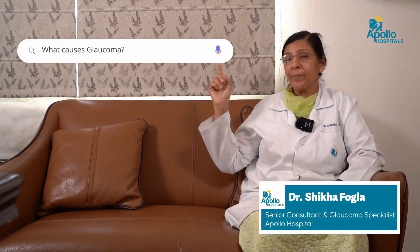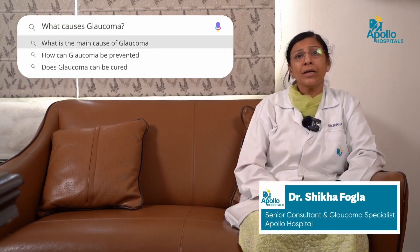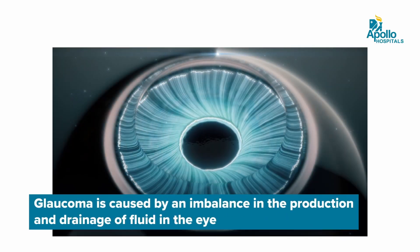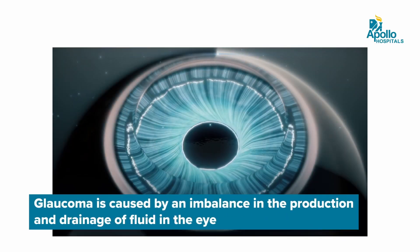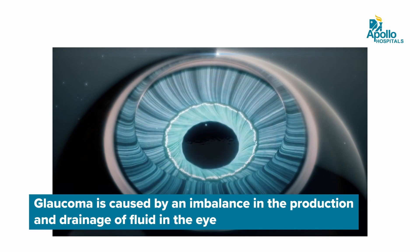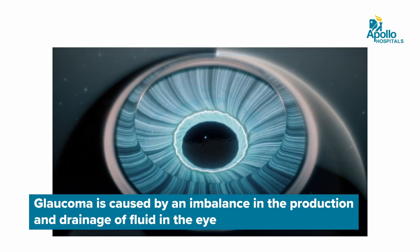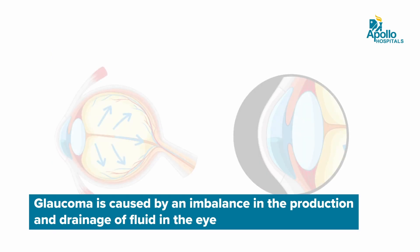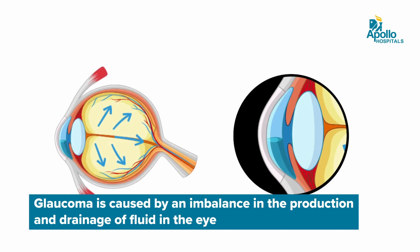What causes glaucoma? There is a fluid that constantly forms in the eye and drains out of the eye. If there is obstruction for the fluid to go out of the eye, that usually causes a rise in eye pressure, causing damage to the nerve, which is called glaucoma.